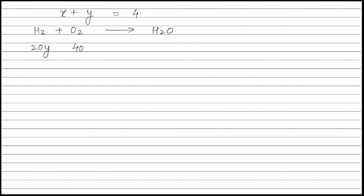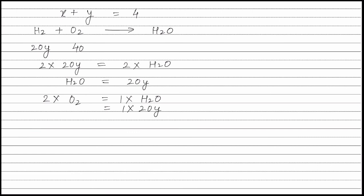Applying the principle of atom conservation on hydrogen atoms: 2 into moles of hydrogen (20Y) equals 2 into moles of water, giving moles of water equal to 20Y. Applying atom conservation on oxygen atoms: 2 into moles of oxygen equals 1 into moles of water, which is 20Y. Therefore moles of oxygen that reacted equals 10Y, and the remaining oxygen is equal to 40 minus 10Y.